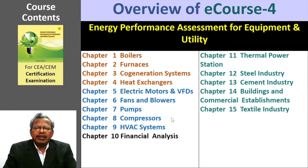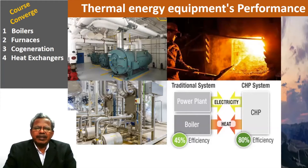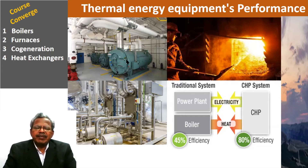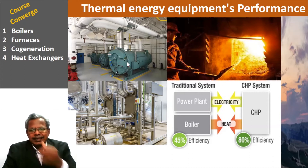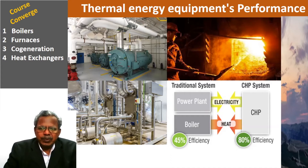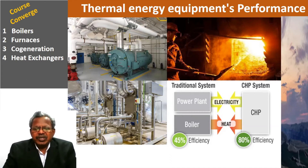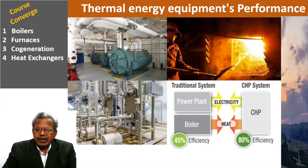In the boiler section, all types of boilers — plant boilers, packaged boilers, and industrial boilers — are covered. Topics include efficiency, evaporation ratio, and identifying losses using the indirect method. You will follow testing standards such as ISO and other international standards. Similarly, co-generation systems and heat exchangers are covered in this first section.